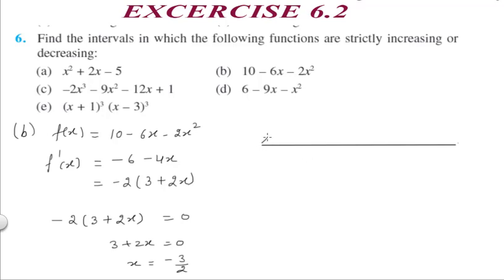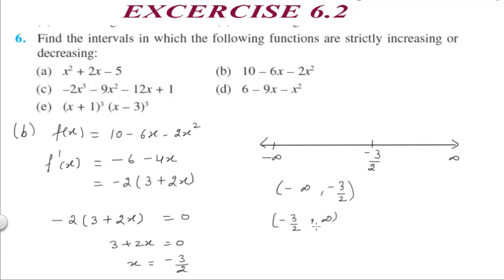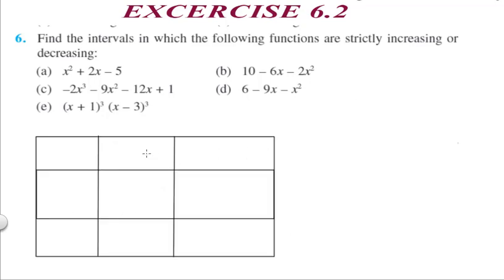We plot x = -3/2 on the number line. It divides the number line into two disjoint intervals: minus infinity to minus 3/2 (open interval) and minus 3/2 to infinity. We form a table with columns: intervals, value of f'(x) (positive or negative), and nature of the function (strictly increasing or decreasing).